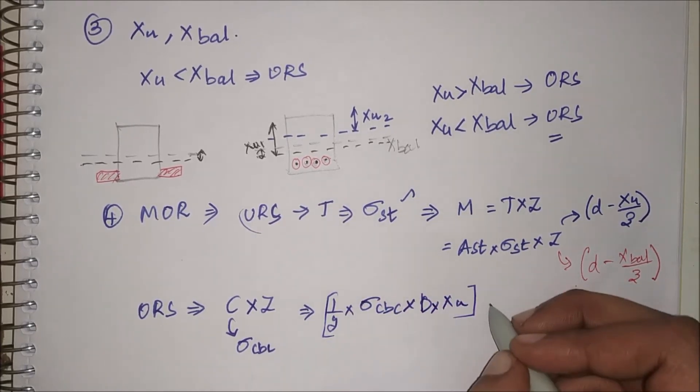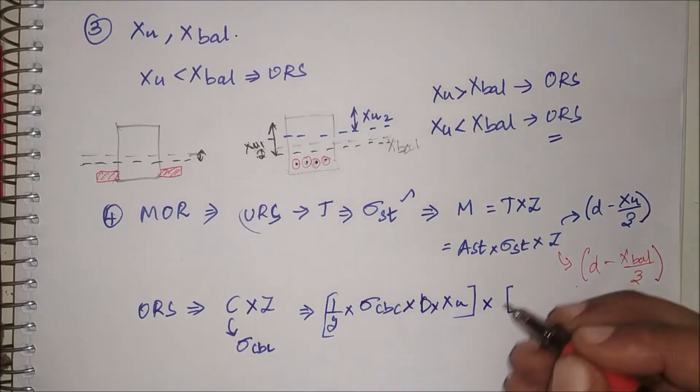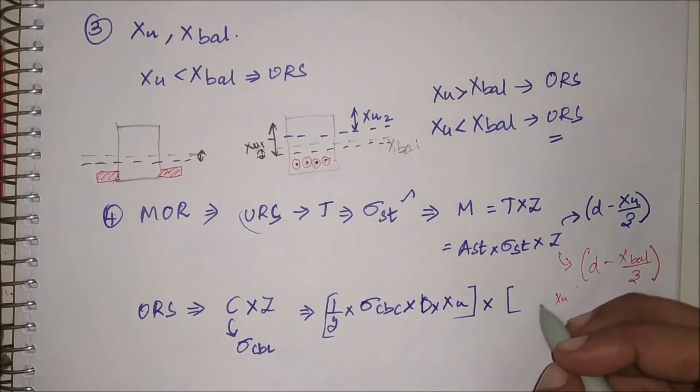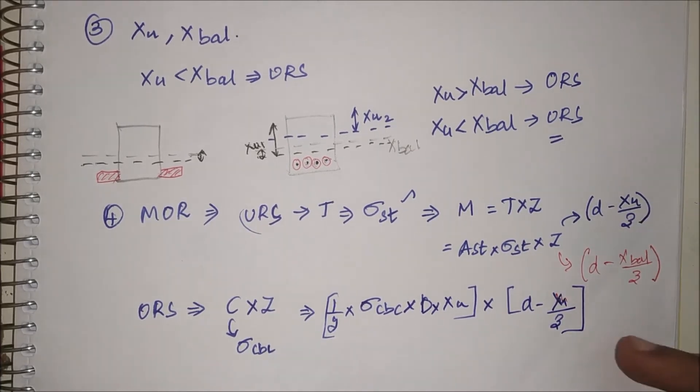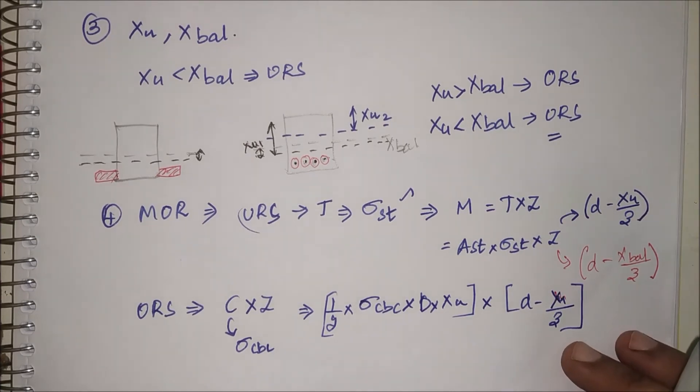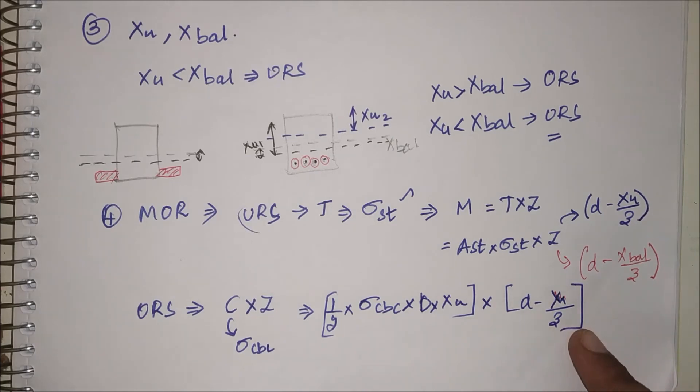This is the value of C into Z. Z will be, since it is an over reinforced section, in terms of Xu only and not X balance. So this will be d minus Xu by 3. But you will have different values for Xu here. That is the reason why I represent Xu as Xu in both the cases. Here you will know everything.